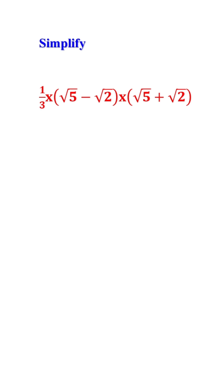I'm going to let you simplify the following: one-third times the square root of 5 minus the square root of 2, times the square root of 5 plus the square root of 2.